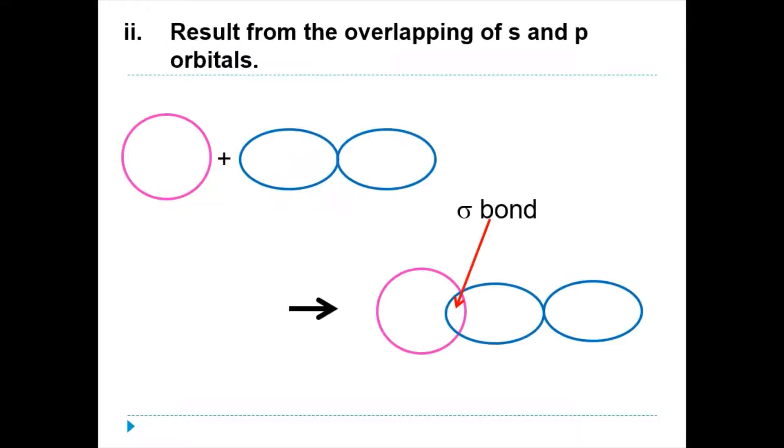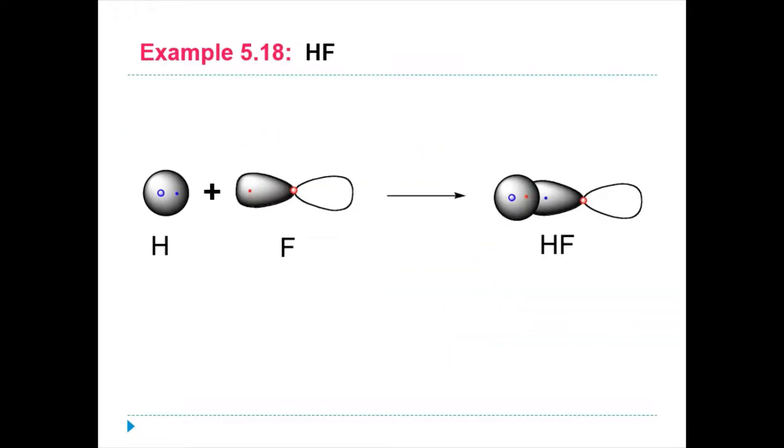Sigma bond can also be formed from the overlapping of S orbitals and P orbitals. As we can see here, the S and P is overlapping and there is an area where we label them sigma bond. Now let's draw the overlapping orbital of the molecule hydrogen fluoride. First, we draw an S orbital that belongs to hydrogen atom and then we draw the P orbital of fluorine. The overlapping part would be labeled as the sigma bond.